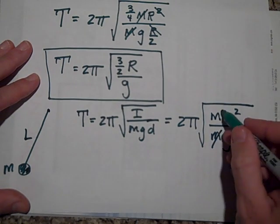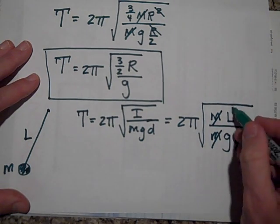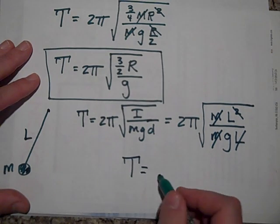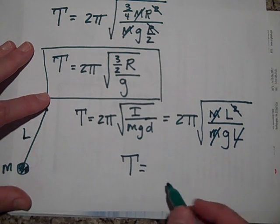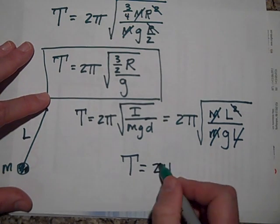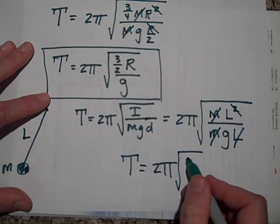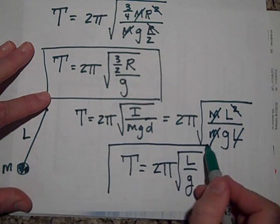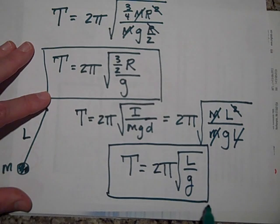So boom, boom, boom, boom. And we get that the period of a pendulum using our physical pendulum equation is 2π times the square root of L over G. All right.